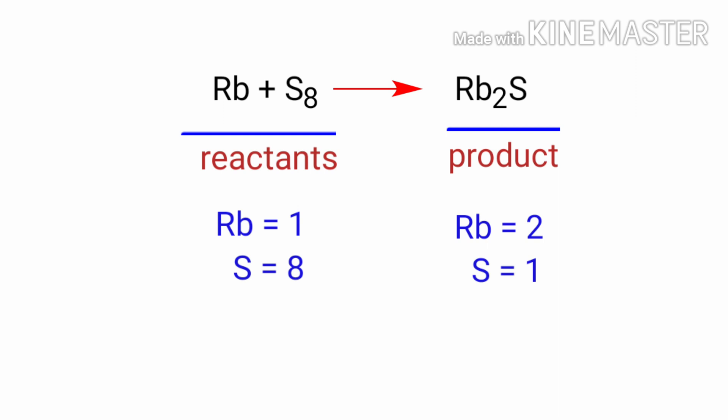In the reactants side there are 1 Rubidium atom and 8 Sulphur atoms present and the product side there are 2 Rubidium atoms and 1 Sulphur atom present. The number of atoms are not balanced on both sides.